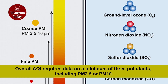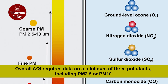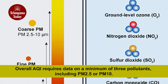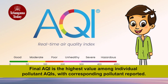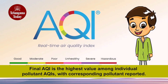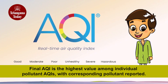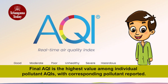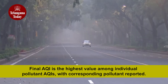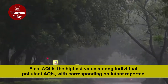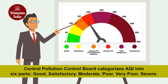Of the minimum three pollutants required, one should necessarily be either PM 2.5 or PM 10. The final AQI is equal to the highest of the AQI values calculated separately for each pollutant, and the corresponding pollutant is also reported.